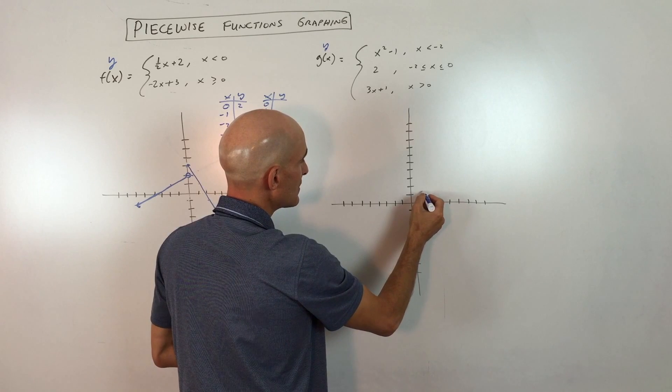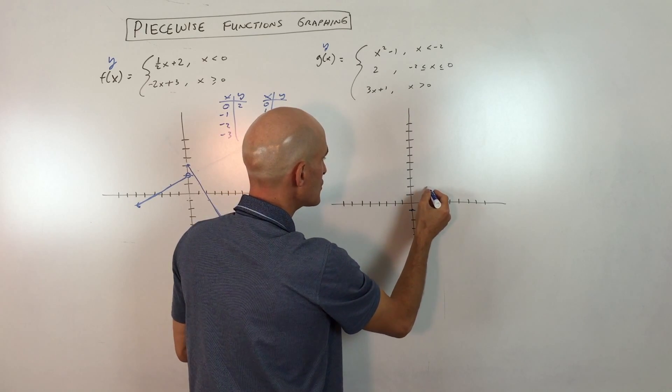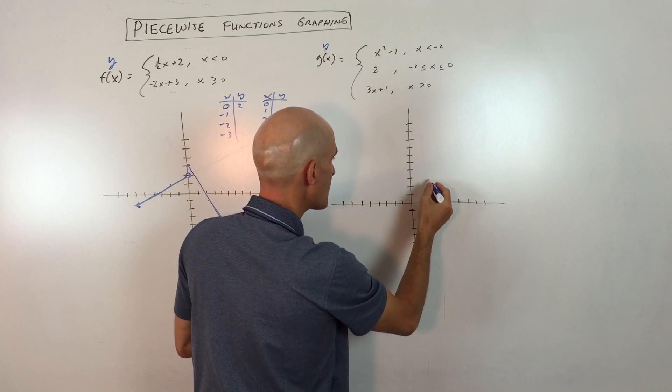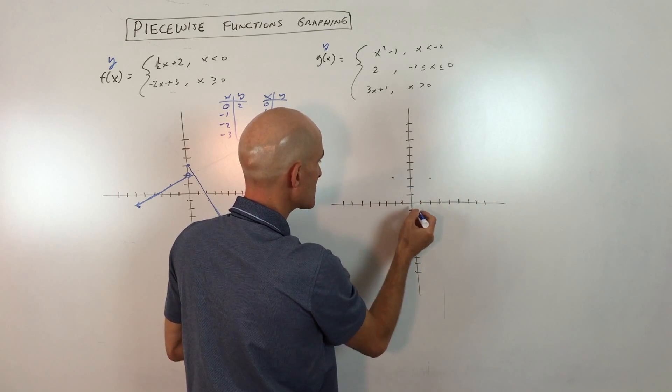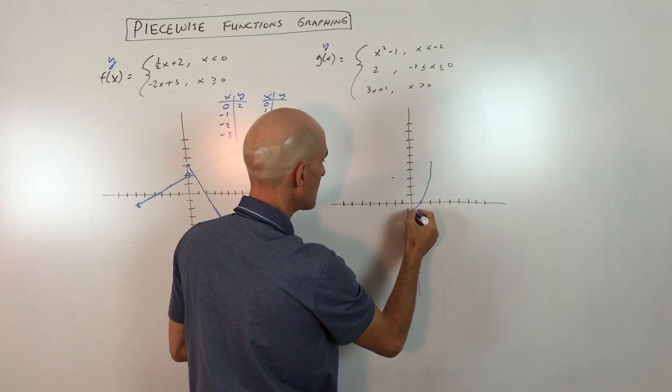And if we graph this, let's see if I can do that 1, 2, 3, 4 nice and accurately here for us. So like this and like this. So this graph looks like this.